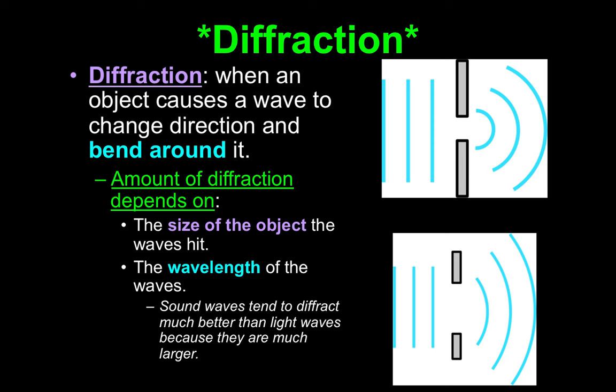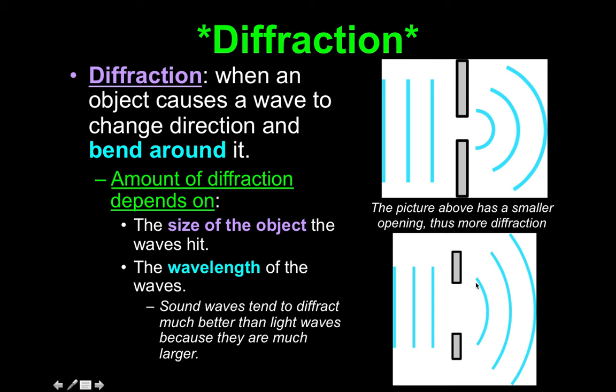So the amount of diffraction depends on the size of the object and the wavelength. Sound waves tend to diffract much better than light waves because they are much larger — sound waves are bigger, so they diffract better. Looking at the picture: the smaller opening on one side shows more diffraction — you can see the curve, there's more bending. Where there's more space between the objects, there's less bending, less diffraction.